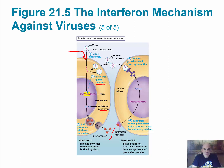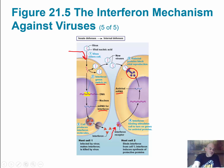Interferon is released and goes to neighboring cells, activating them to switch on antiviral mRNA genes. Those genes are transcribed to produce mRNA, then translated to produce proteins that help block viral reproduction. In this way, we can slow the production of new viral particles.